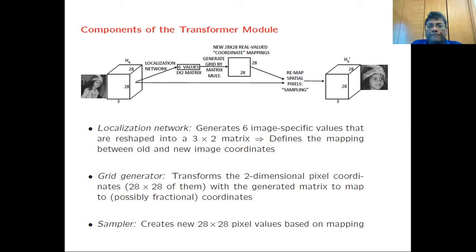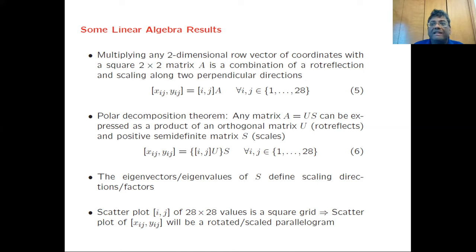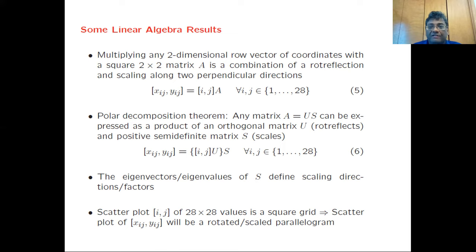We'll discuss some linear algebra basics needed to understand how the transformation from a spatial grid works — how rotations, reflections, and scalings are happening. Let's focus on a two-dimensional row vector of coordinates. For a 28x28 grid, all row coordinates are pairs of integers drawn between 1 and 28, giving the coordinate of that pixel. If you multiply this two-dimensional row vector with any square 2x2 matrix A, this is always a combination of rotation, reflection, and scaling along two perpendicular directions.